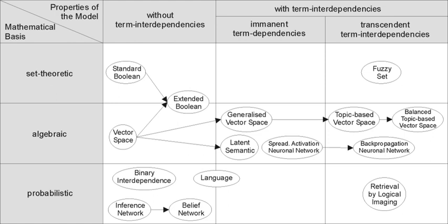This ranking of results is a key difference of information retrieval searching compared to database searching. Depending on the application, the data objects may be, for example, text documents, images, audio, mind maps or videos. Often the documents themselves are not kept or stored directly in the IR system, but are instead represented in the system by document surrogates or metadata.